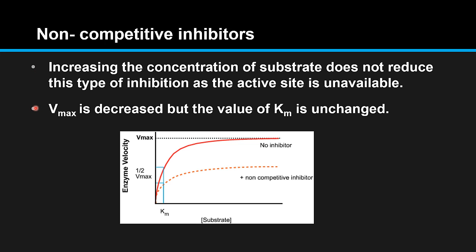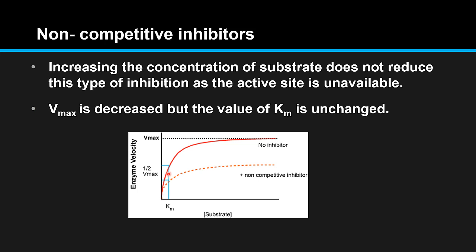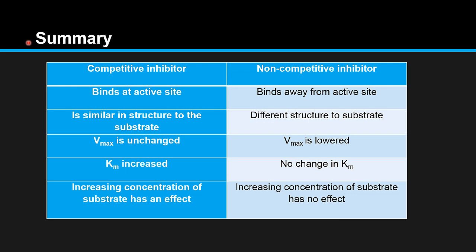Increasing the concentration of substrate does not reduce this type of inhibition as the active site is unavailable. Vmax is decreased but the value of Km is unchanged. From the graph you can see that with a non-competitive inhibitor the value of Vmax has decreased but the value of Km is the same.